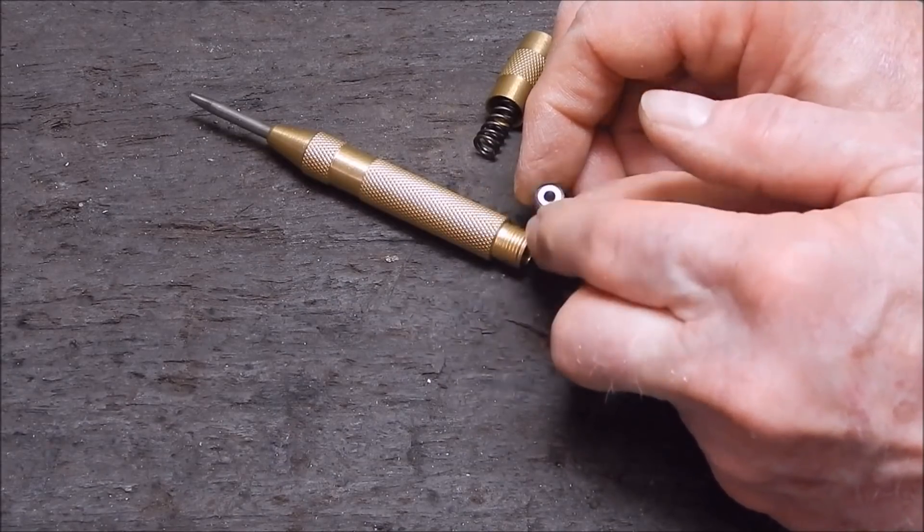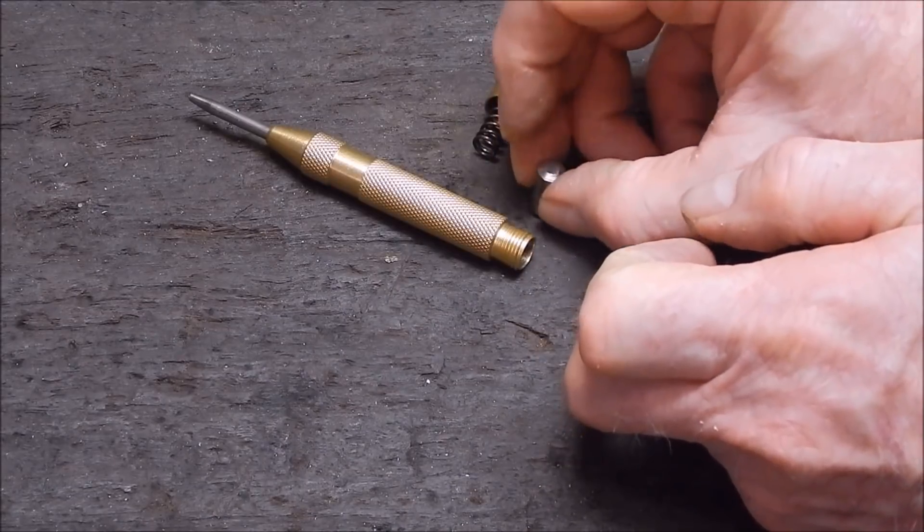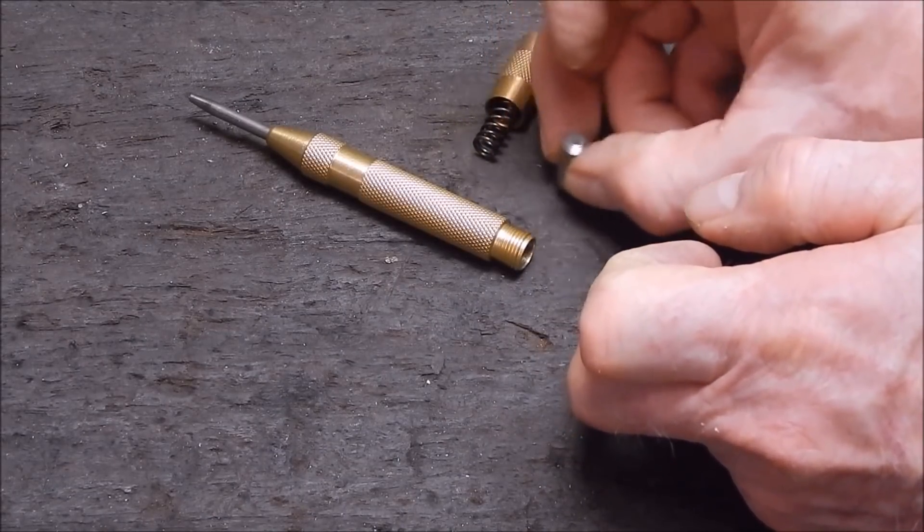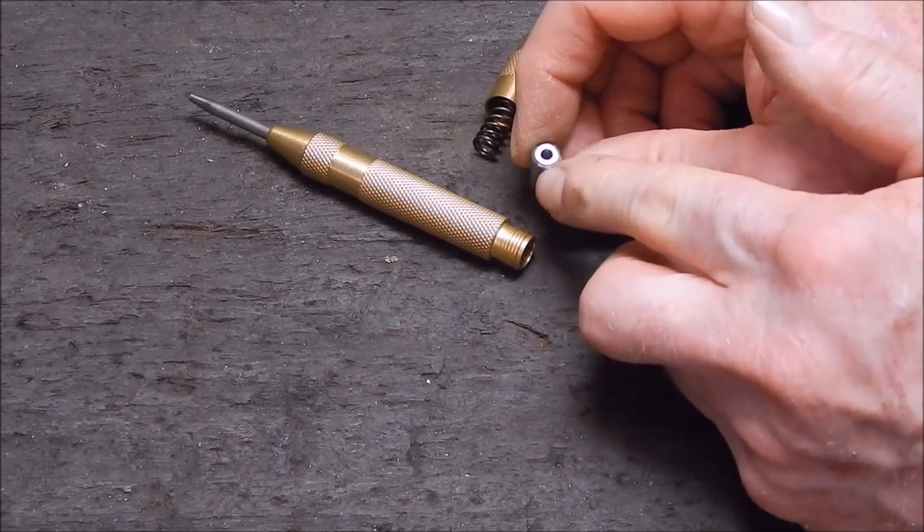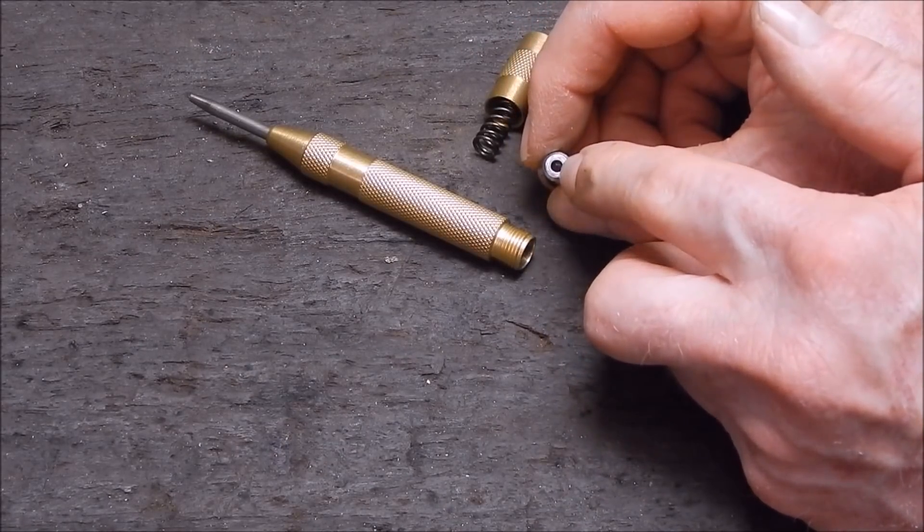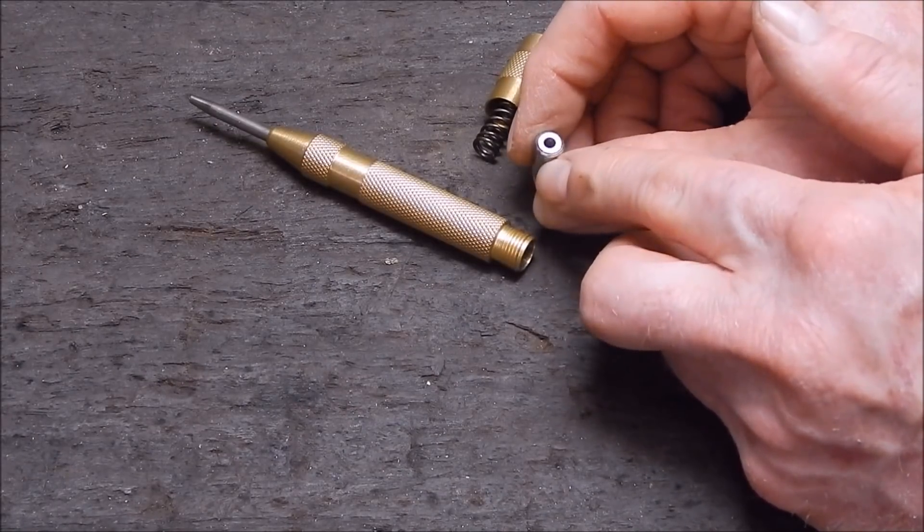But then just get your oilstone with some oil on it and refinish the end so that it's nice and smooth and shiny. And you'll see there's like a little brass center in there as well. You want this all just dead flat.